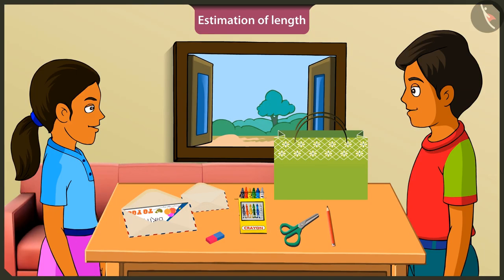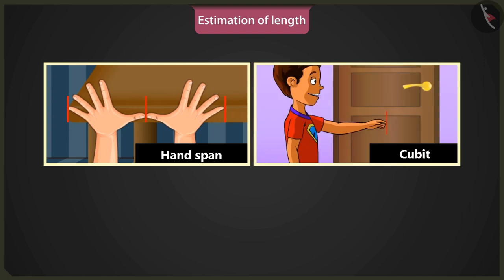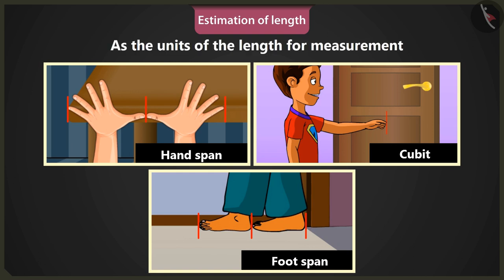Do you know, Mintu? When I went to my grandfather's house during the holidays, he told me that people during the old times used certain body parts to determine the length of objects, and used estimated measures of everything. They used the length of palm — that is, hand span — length of hand — that is, cubit — and length of foot — that is, foot span — as units of measurement of length.